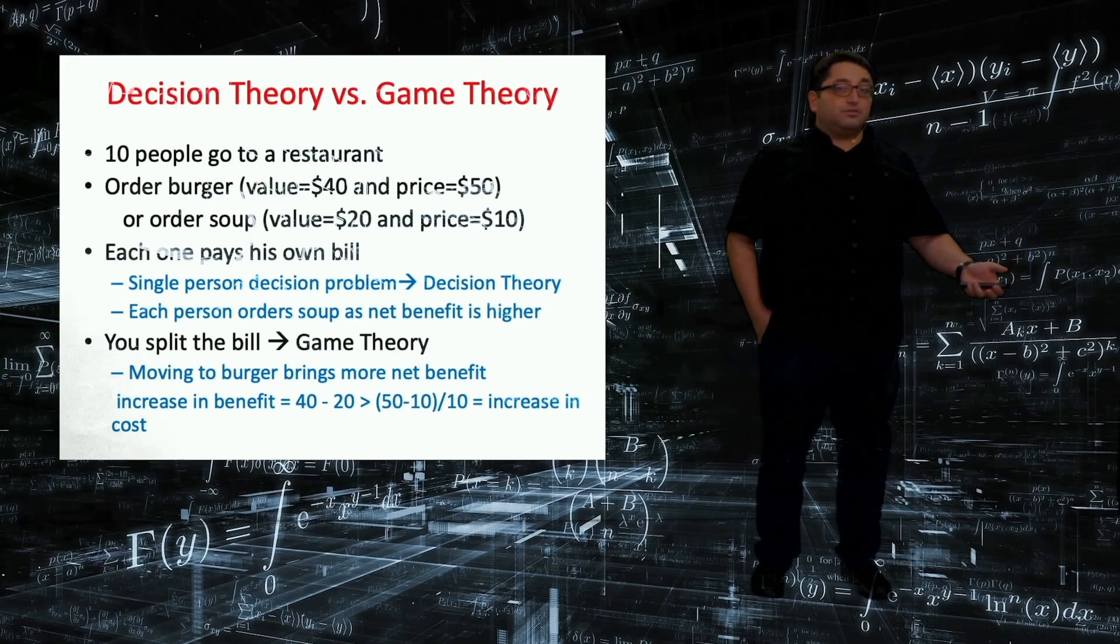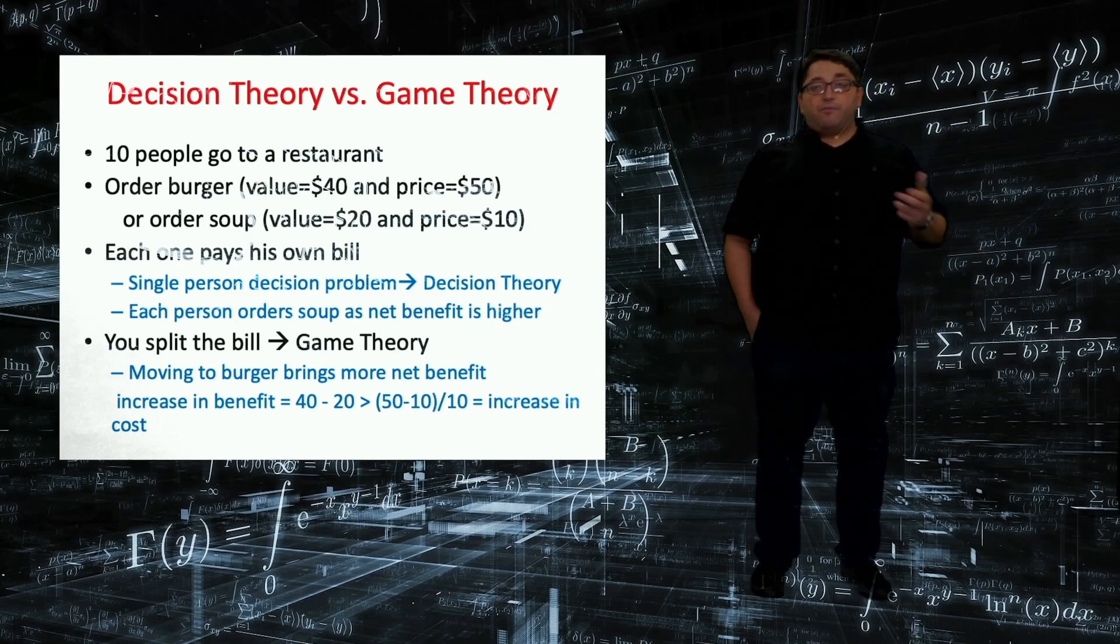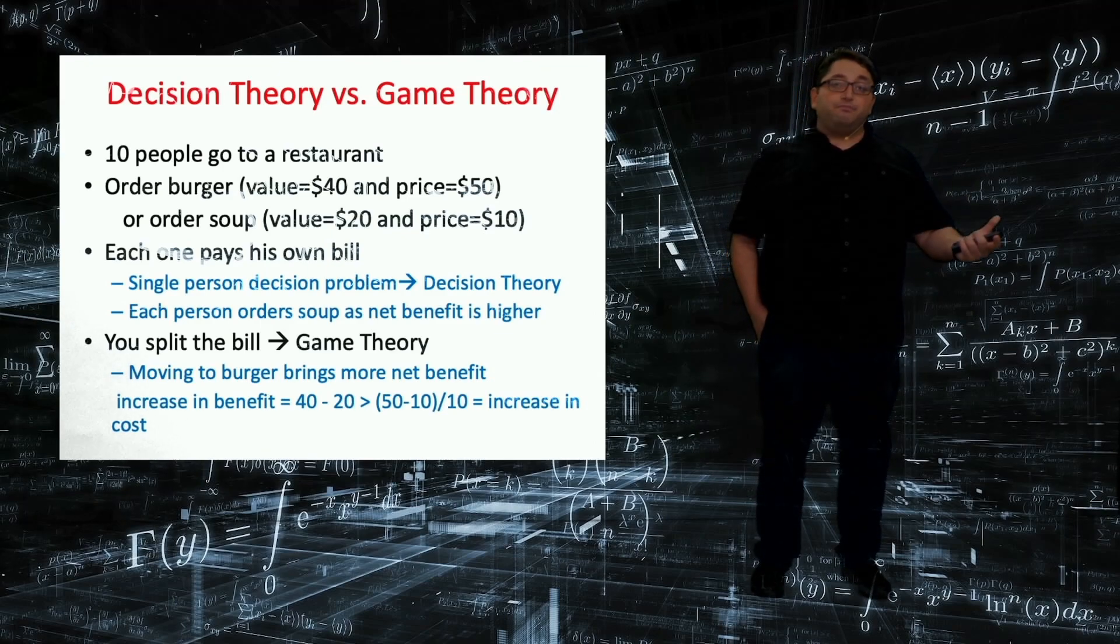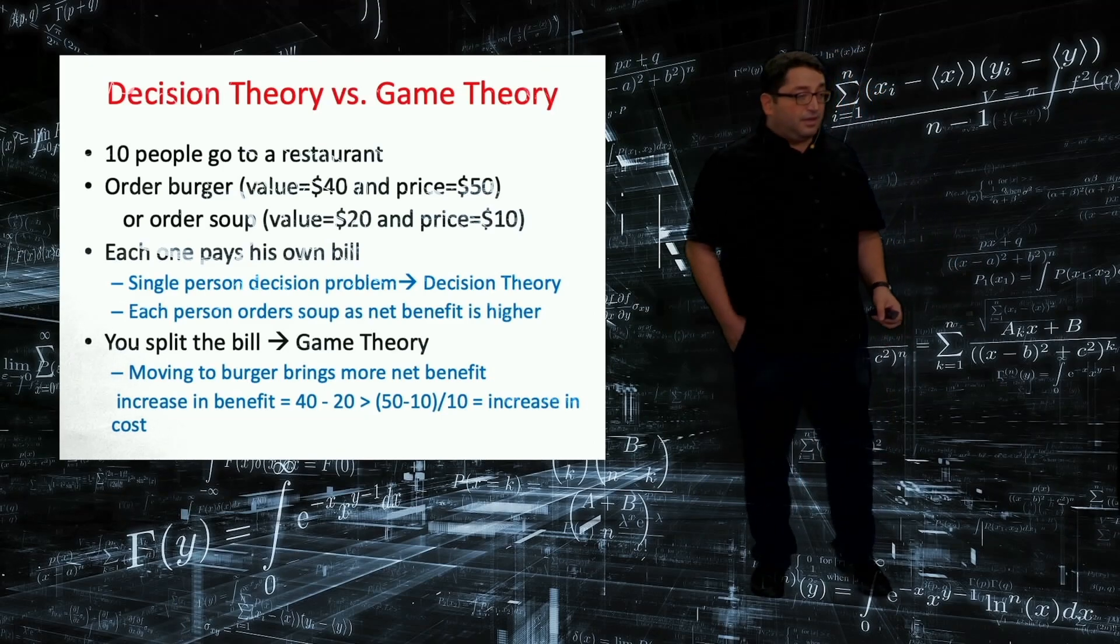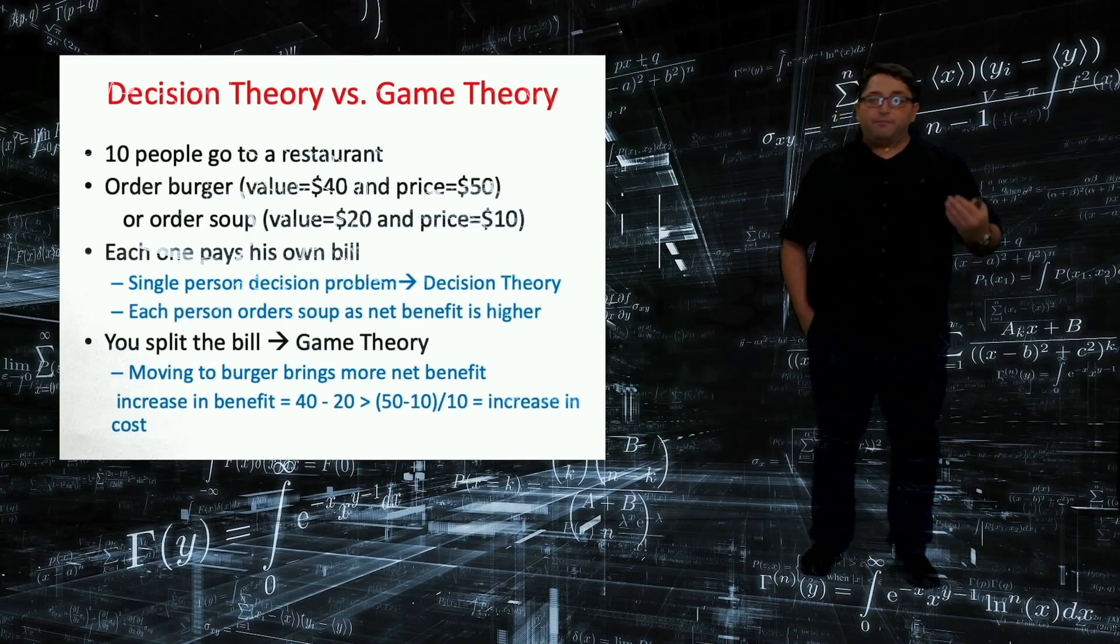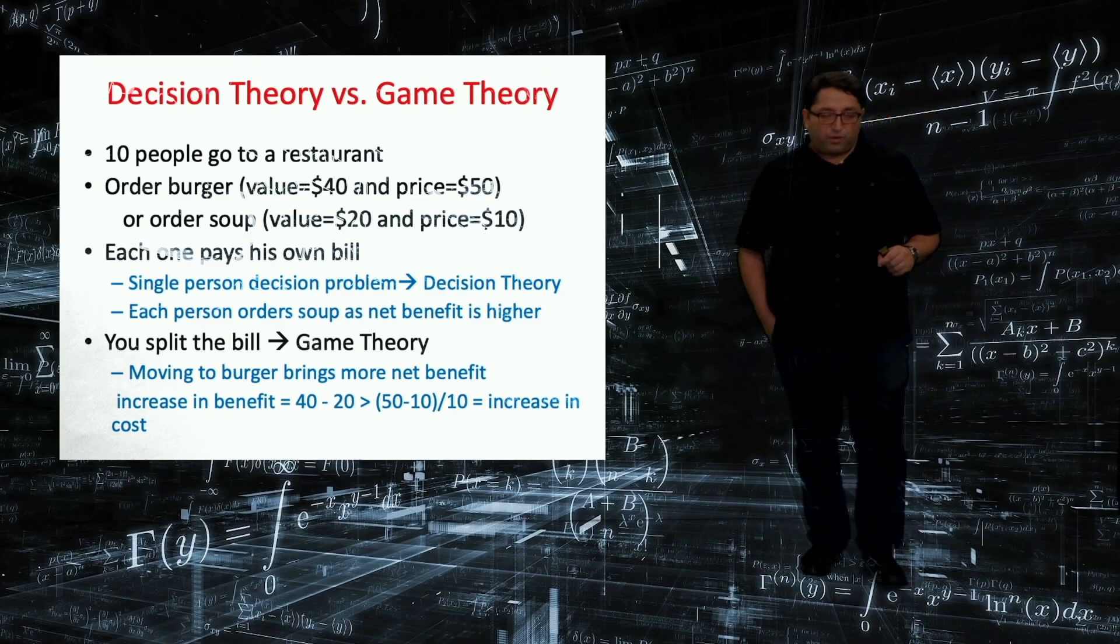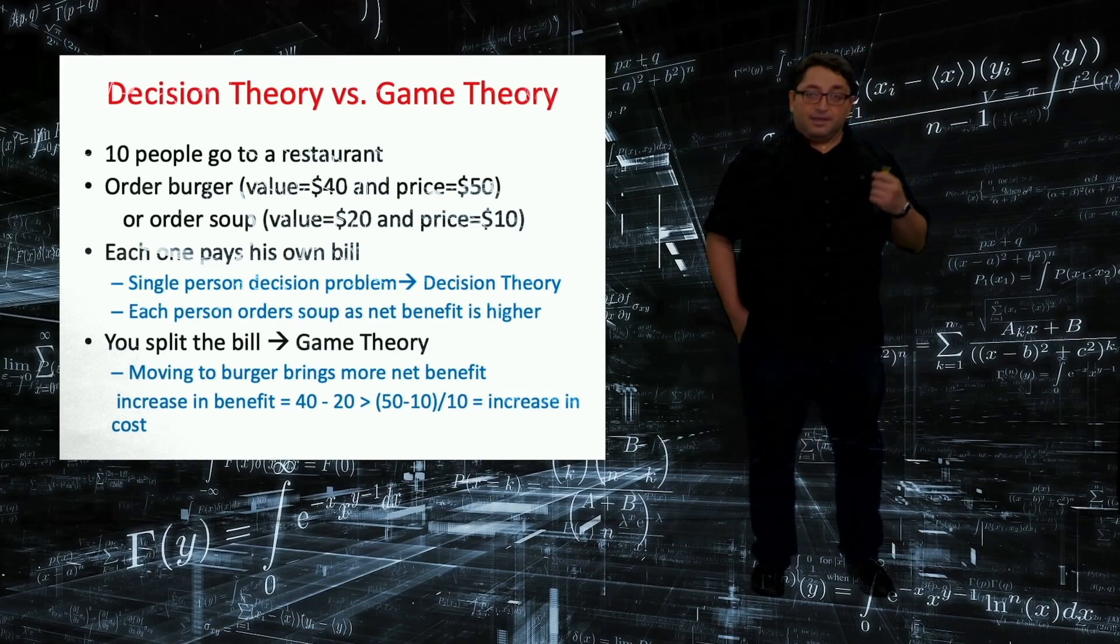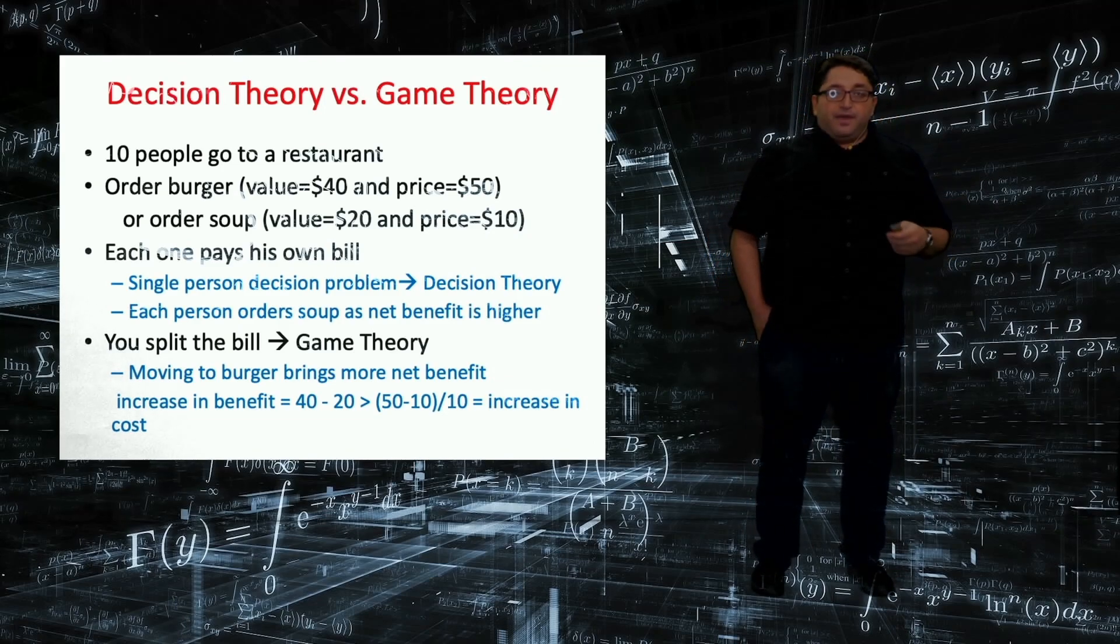So I'm going to switch from the soup to the burger and everybody will follow. Everybody orders burger. So the total bill will be 50 times 10 = $500. Everybody pays equally, so the share of the bill will become $50. How much benefit did I gain by eating a burger? $40. My cost is $50, so I'm going to lose $10, and so is everybody else. So this is also an example of prisoner's dilemma, which I'm going to talk more about in subsequent lectures. By making this a game, everybody is worse off.